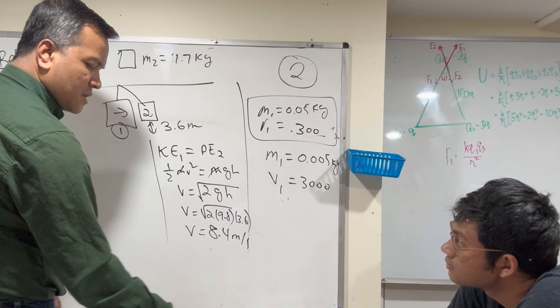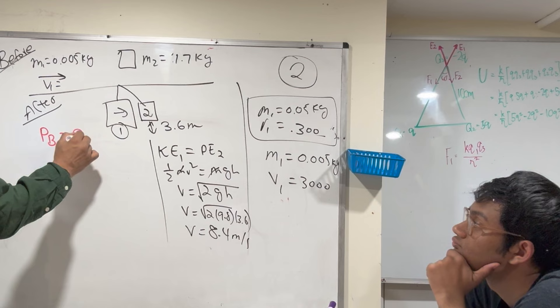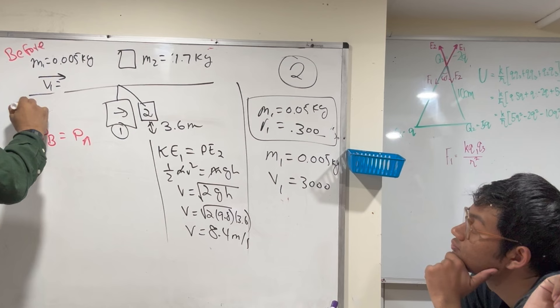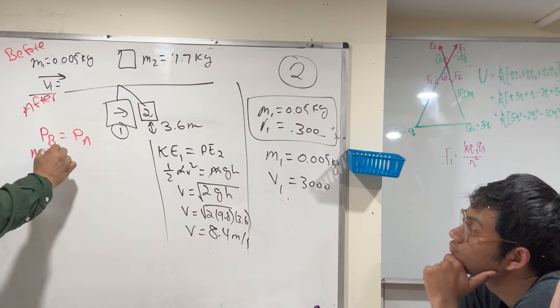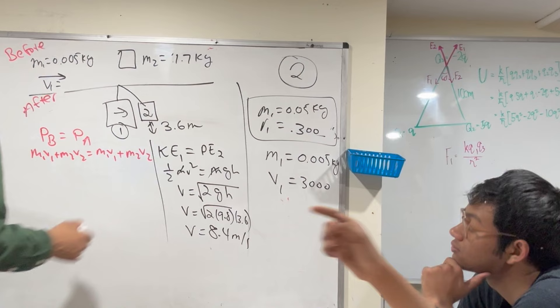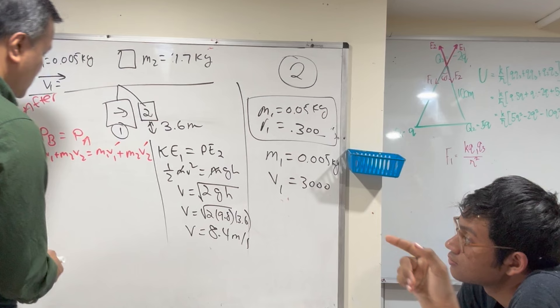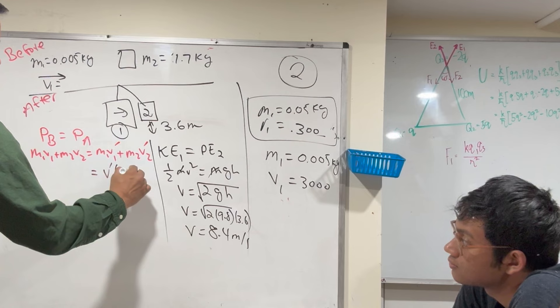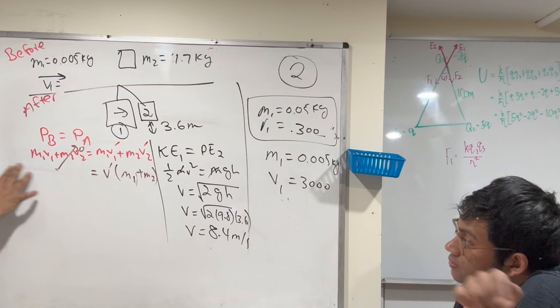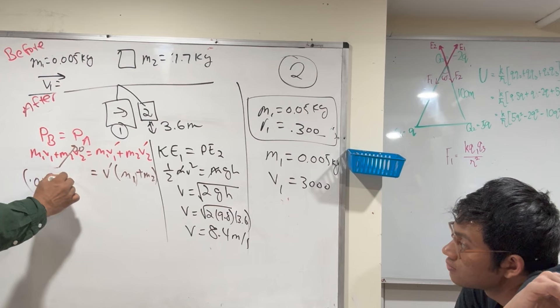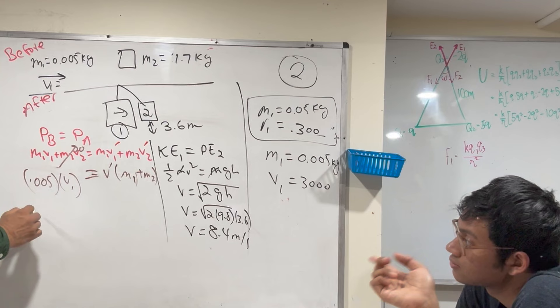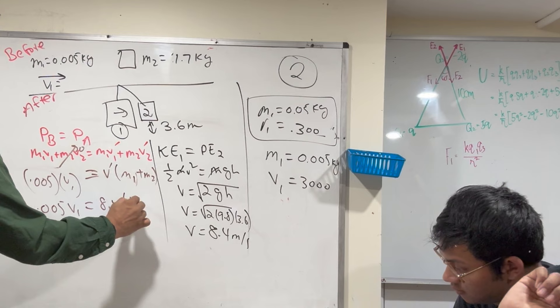Now we use conservation of momentum. Momentum before equals momentum after: m1·v1 + m2·v2 = (m1 + m2)·v'. Since m2 is embedded in m1, their velocities are the same after. There is no m2·v2 term before — it's zero. So: 0.005 × v1 = 8.4 × 1.705. We solve for v1.